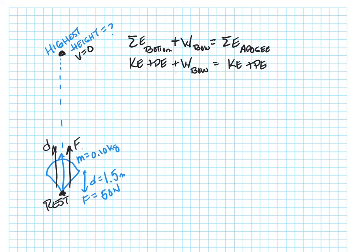I'll define the energies: kinetic energy plus potential energy due to gravity plus the work of the bow equals kinetic energy plus potential energy due to gravity. Then I go through my questions. At the bottom, is it moving? No — when I pull the bow back, I'm holding my hand still, so that goes away. Is it higher than the other location? No — that goes away. At the highest point, is it moving? No, because that's the definition of apogee. So that goes away too. That leaves just the work of the bow equal to potential energy.